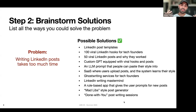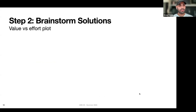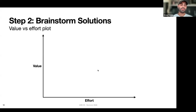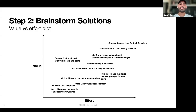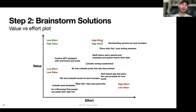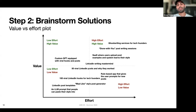Just having this laundry list of solutions isn't super helpful. What we can do — and many people are familiar with this approach — is create a value versus effort plot. Two dimensions: value on the y-axis, effort on the x-axis. You give a best-guess estimate of where you'd place each potential solution. From this view you get four quadrants. In the high effort, high value area: ghostwriting services for tech founders — it can be fast, easy, and good, everything tech founders want — but it's high effort because it requires your time or finding copywriters to hire.